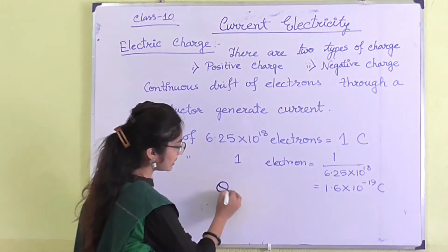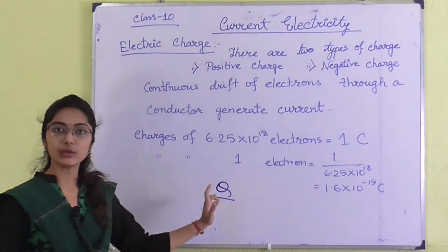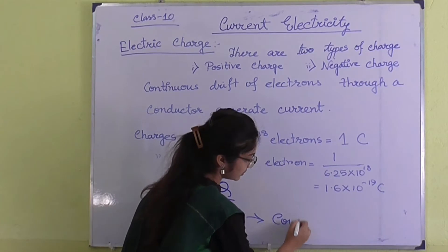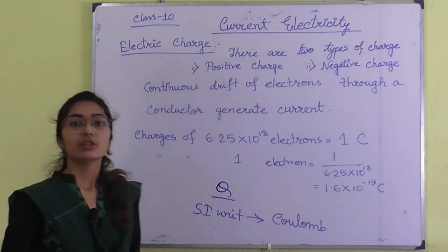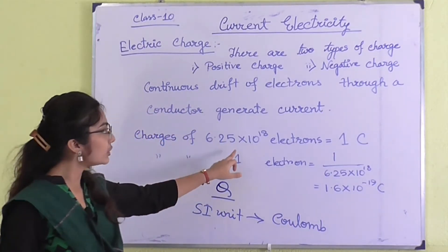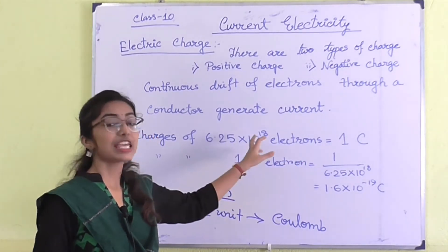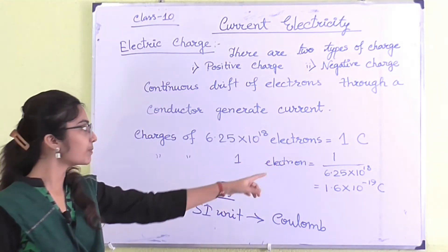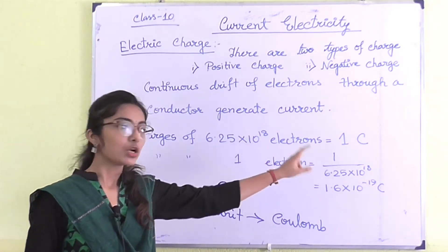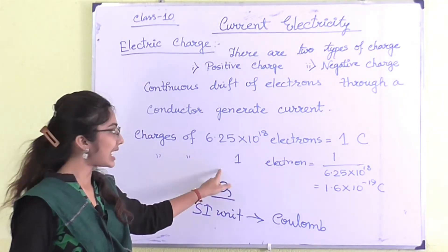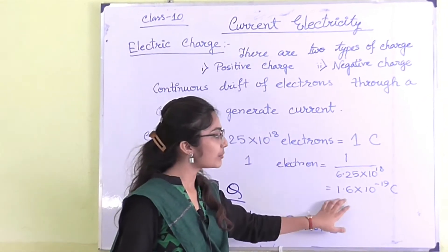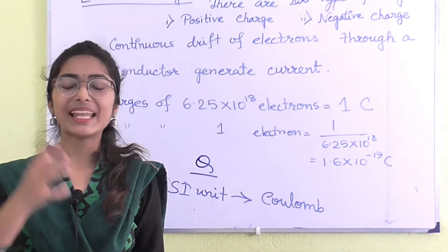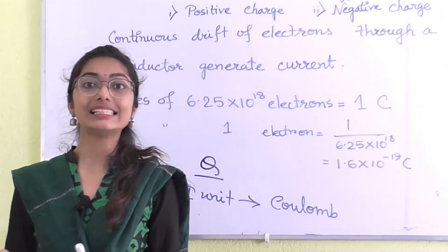Charges can be represented by the symbol Q. The SI unit of charge is Coulomb. When 6.25 × 10¹⁸ electrons pass through a conductor, that constitutes one Coulomb. The charge of 1 electron is 1 ÷ (6.25 × 10¹⁸), that is 1.6 × 10⁻¹⁹ Coulomb. So the electron is mainly responsible for the constitution of current in a conductor.